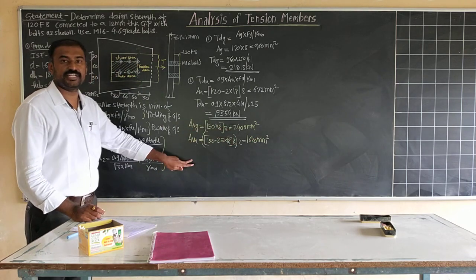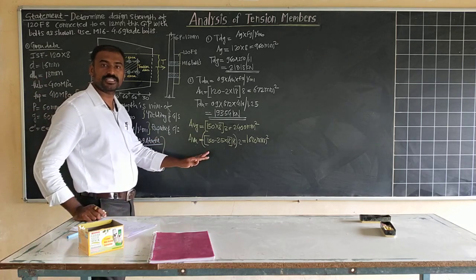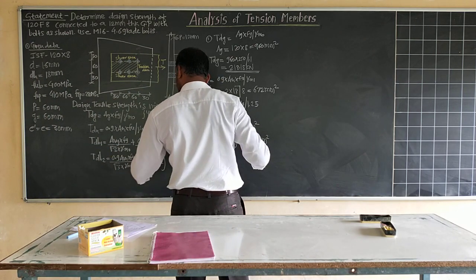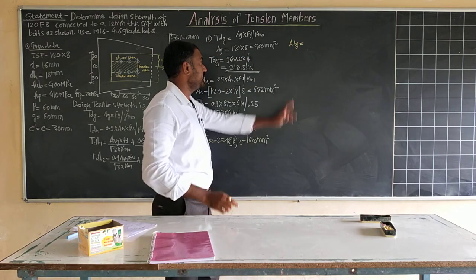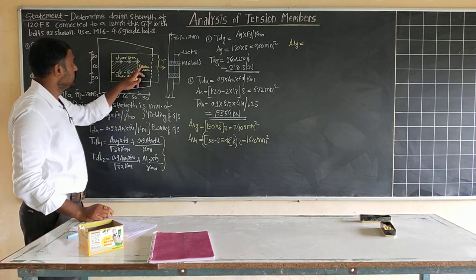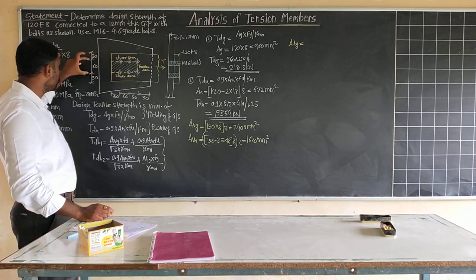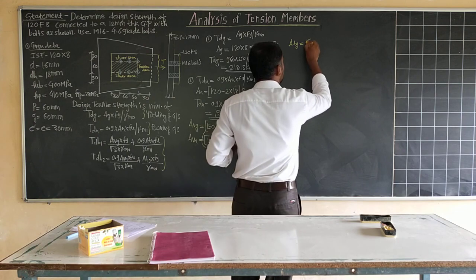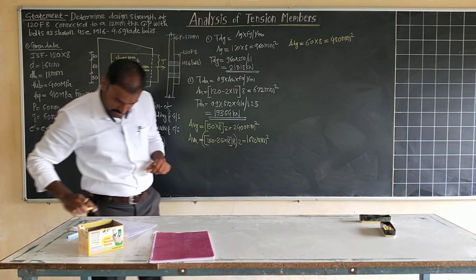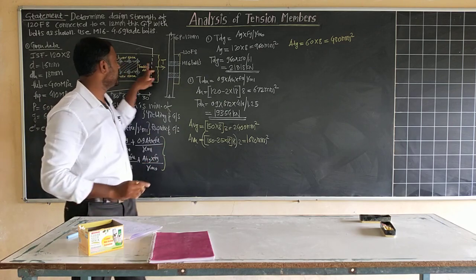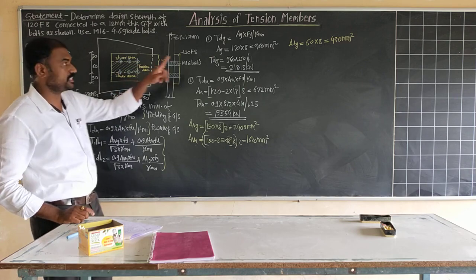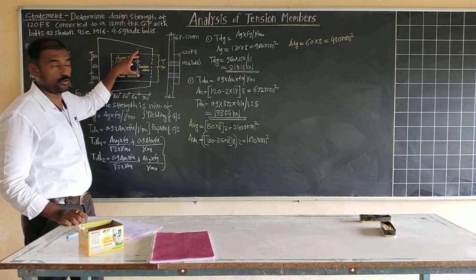For gross tension area ATG, the tension direction is perpendicular to the force, spanning one gauge distance of 60 mm. Only one tension area is present: ATG = 60 × 8 = 480 mm². No hole deduction is made here.